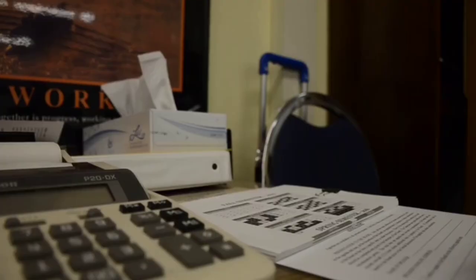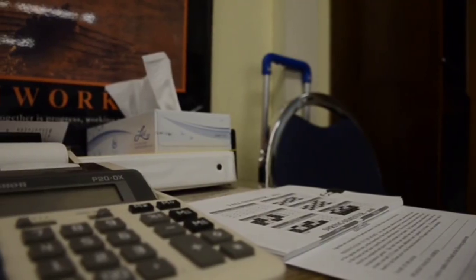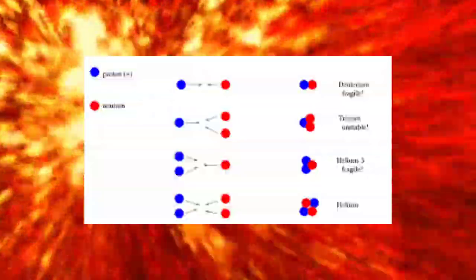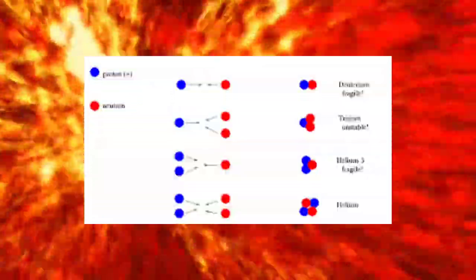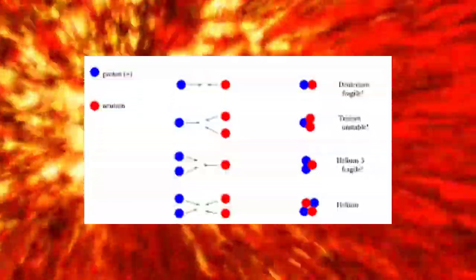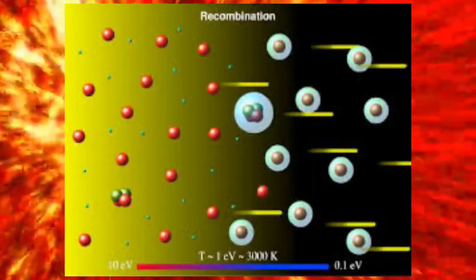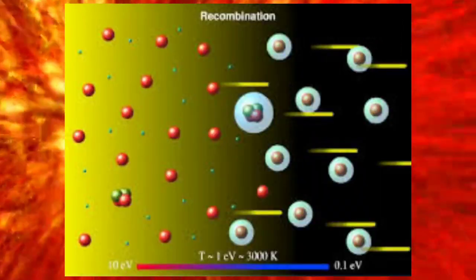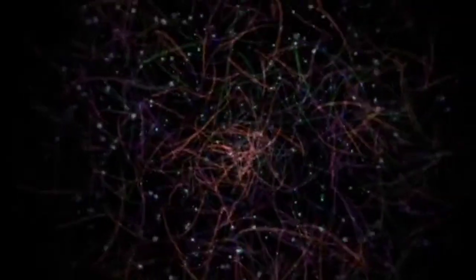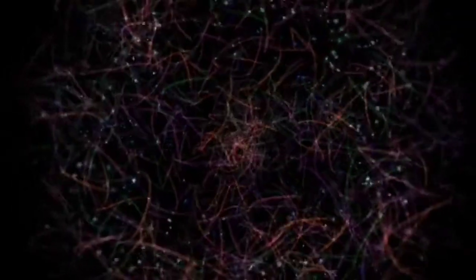The deuterium nuclei then would have combined with more protons and neutrons to make helium nuclei, which contain two protons and neutrons, and also a small amount of heavier elements like lithium and beryllium. One can calculate that in the hot big bang model, about a quarter of the protons and neutrons would have been converted into helium nuclei, along with a small amount of heavy hydrogen and other elements. The remaining neutrons would have decayed into protons, which are nuclei of ordinary hydrogen atoms.